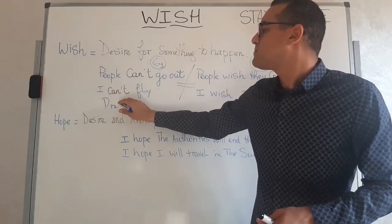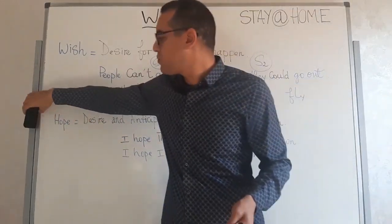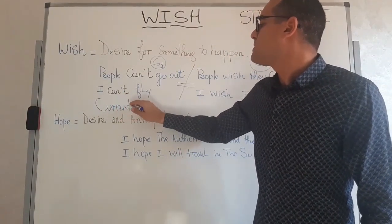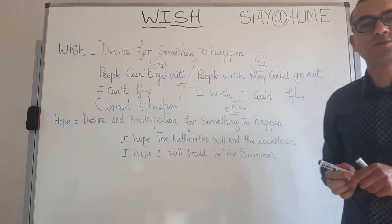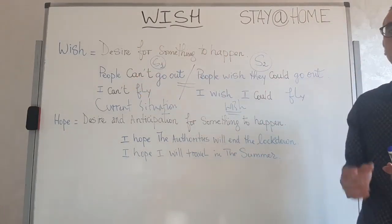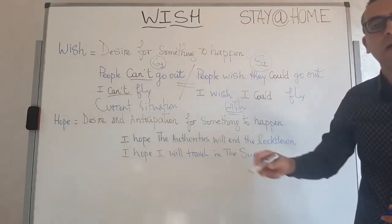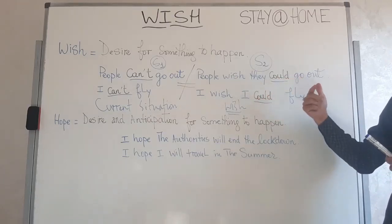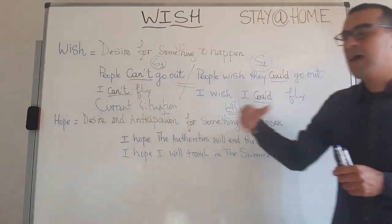We can call S1 the current or real-life situation, and S2 the wish — what we want to have. We always wish for the opposite of the current situation. We express this opposite through the verb: for example, can't is negative, so we make it positive. But there is also a transformation we must pay attention to in terms of tenses — we have to change the tense of the verb. We will talk about this later.